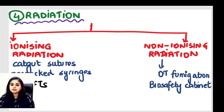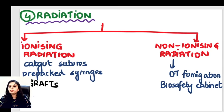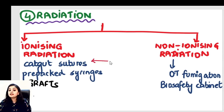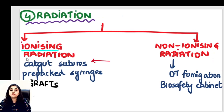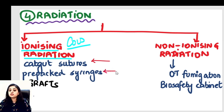When is ionizing radiation (cold sterilization) used? For catgut sutures — since catgut cannot withstand autoclave heat, it's sterilized using ionizing radiation. Also used for pre-packed syringes and grafts. Non-ionizing radiation (UV and infrared) is used for OT fumigation — to sterilize the operation theatre — and for biosafety cabinets used in microbiology labs.